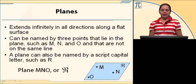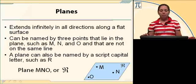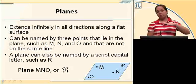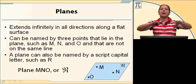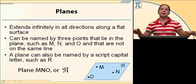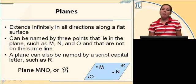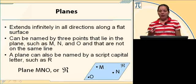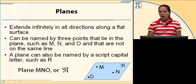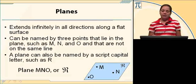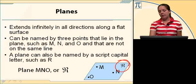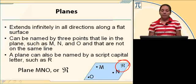Planes extend in all directions along a flat surface forever. That piece of paper is an example of a part of a plane. If you imagine that piece of paper extending forever in all directions, that would be a plane. When you name a plane, you name it with three points. Here I've got points M, N, and O. So I can name it MNO, OMN, NOM, whatever order you want — name it with three points. Or you can use a script capital letter, in this case R.